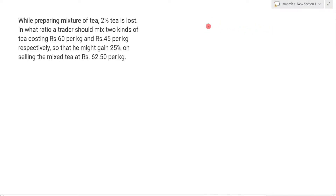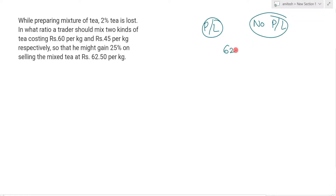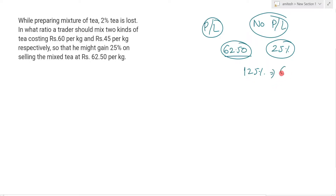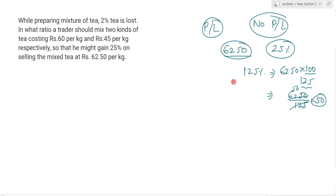Dekho, यहाँ पे profit और loss से better होता है no profit और no loss. यहाँ पे 62.50 पे 25% profit था. It means यह जो price है वो 125% होगा CP का. तो original CP कितना होगा? Simply आप लिखोगे 62.50 × 100 ÷ 125. तो यह value आएगा 62.50 ÷ 1.25, यानी 50. It means 50 rupees पे no profit और no loss हो रहा है.